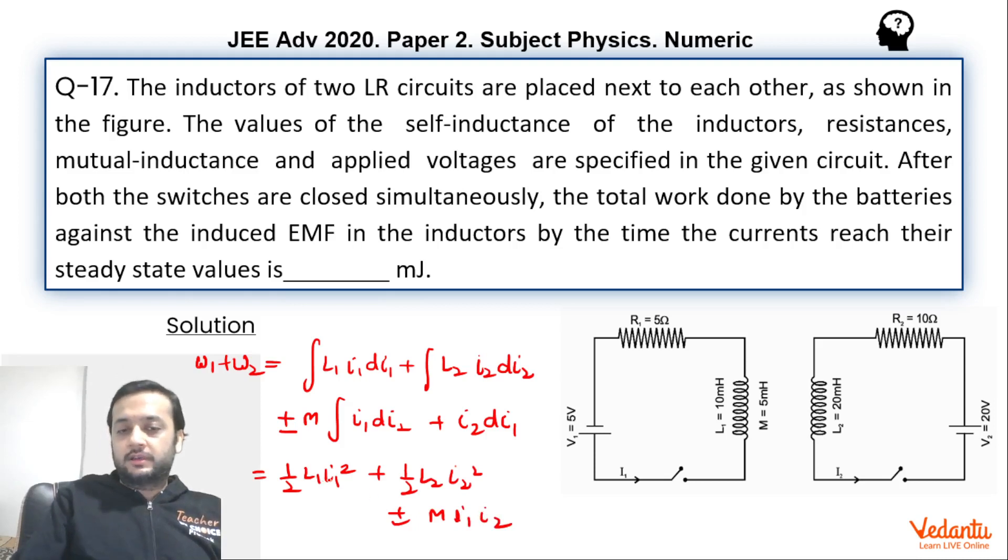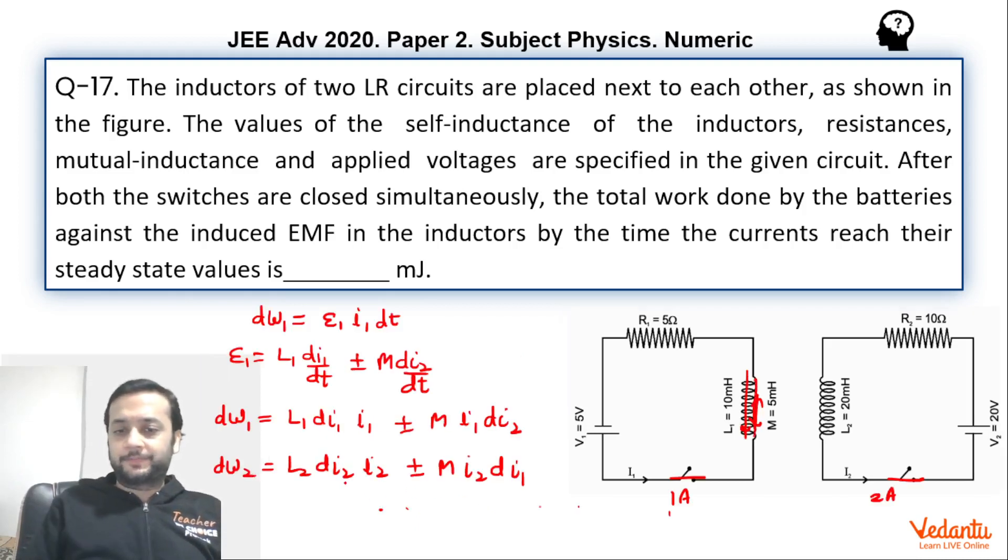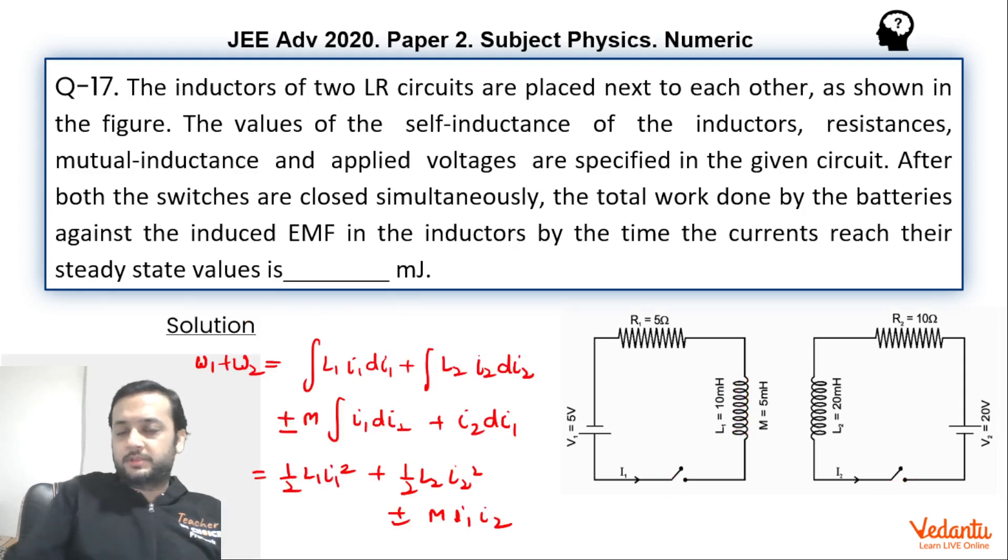When you put the values, we can put I1 as 1 ampere and I2 as 2 amperes. M is given and everything is given. So you will get your answer in millijoules because they are millihenries. If you take plus sign, you get 55 millijoules. If you take minus sign, you get 35. This comes out to be 45 and this 10, so 45 plus 10 is 55 and 45 minus 10 is 35.